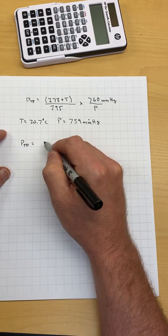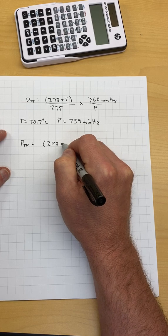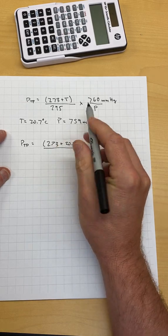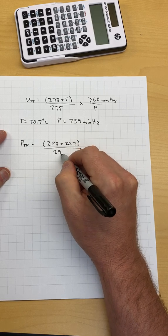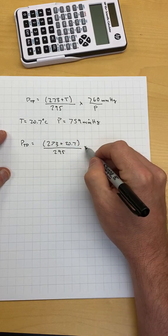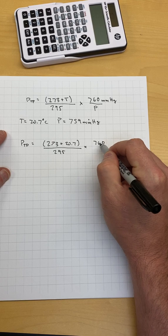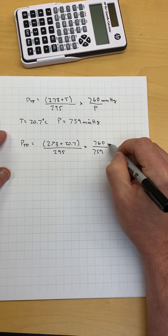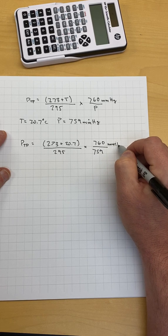So temperature pressure is equal to 273 plus 20.7 divided by 295 times 760 divided by 759 millimeters mercury.